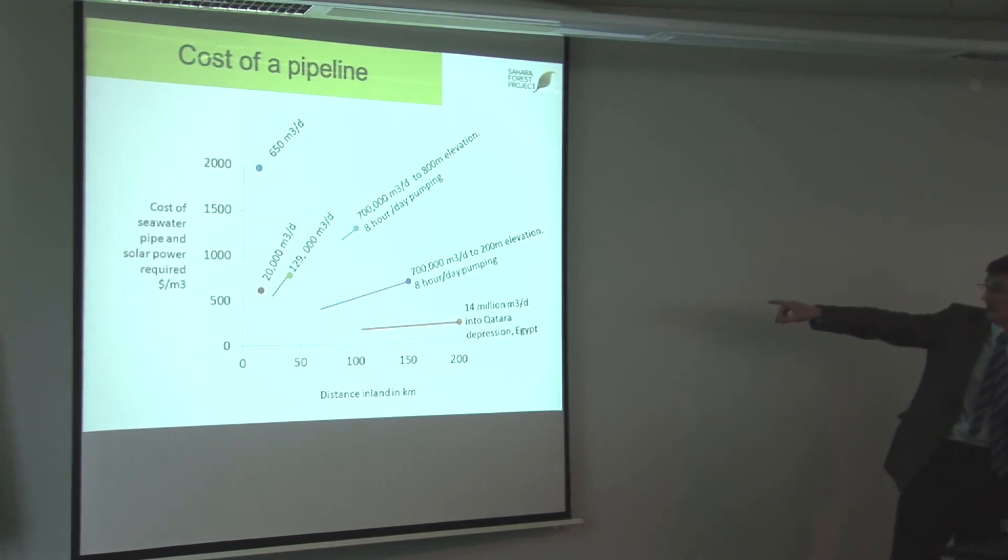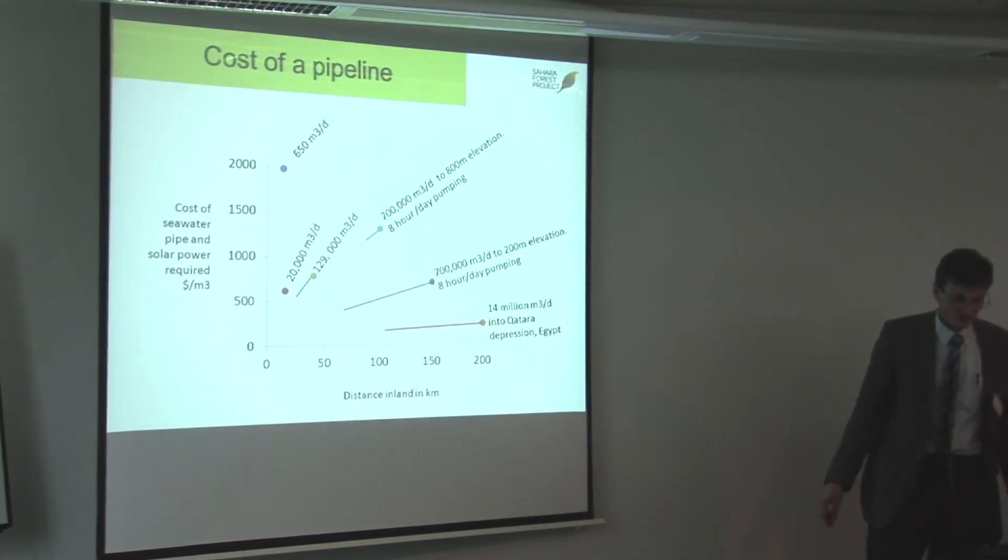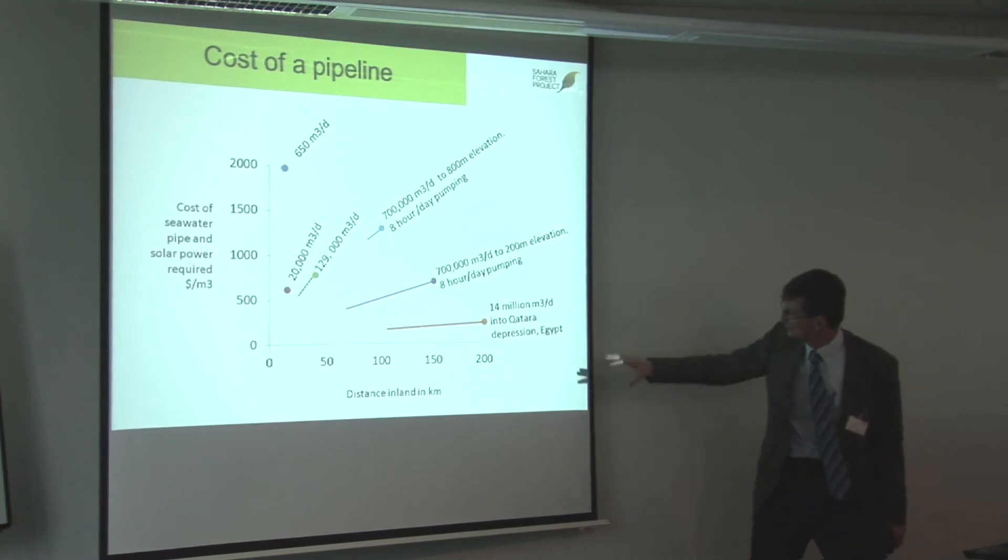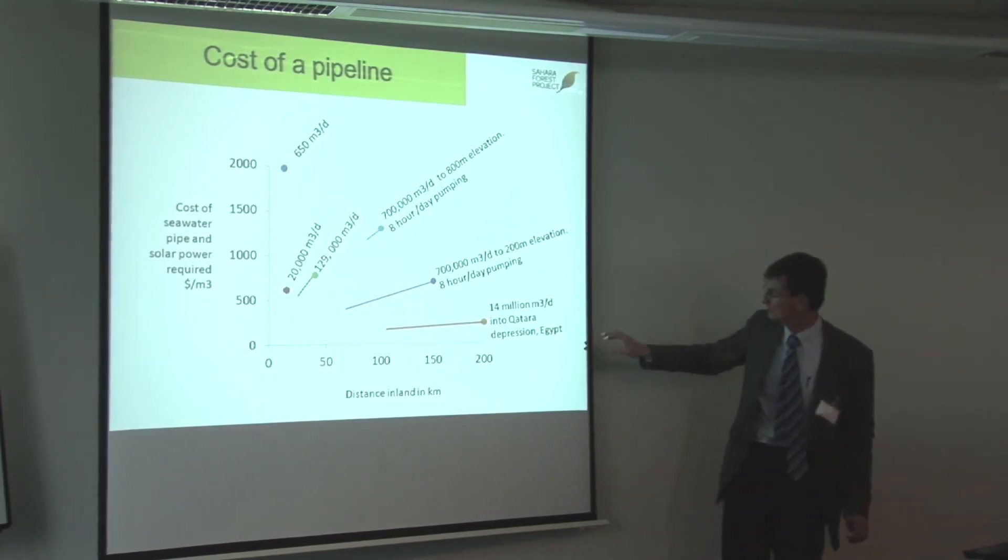To put this into perspective, if it was at this price, it would add about $25 per square meter onto the cost of a greenhouse.